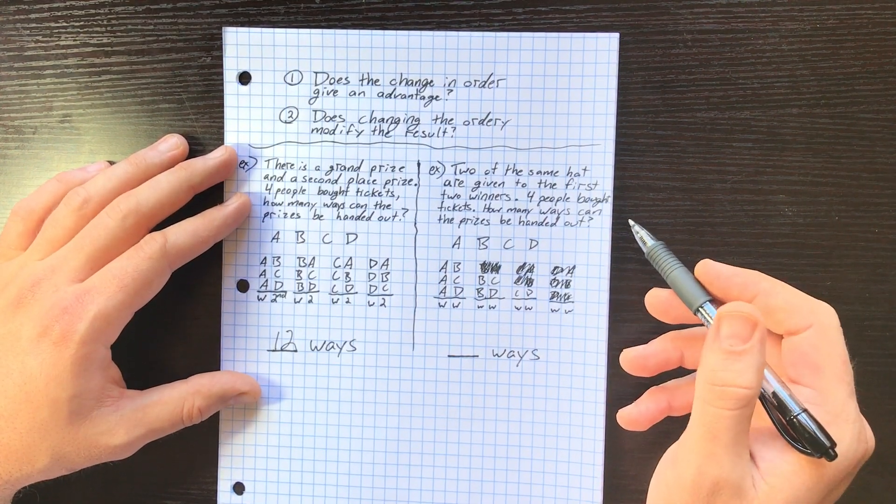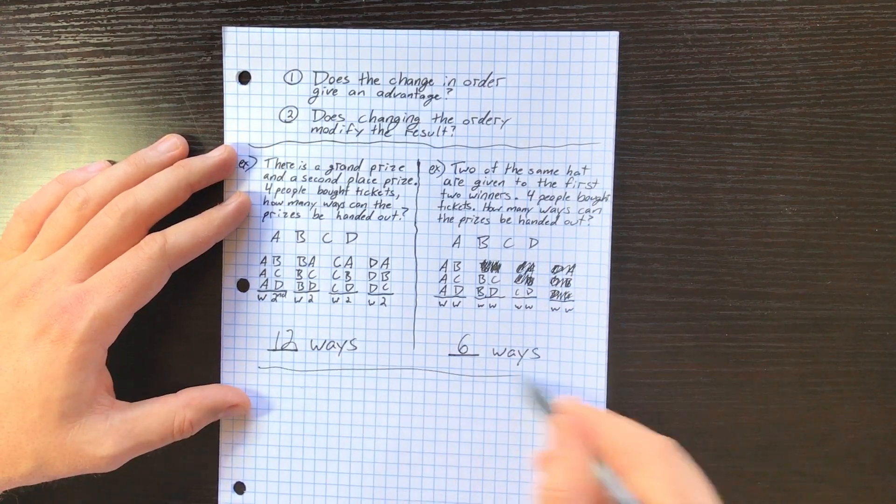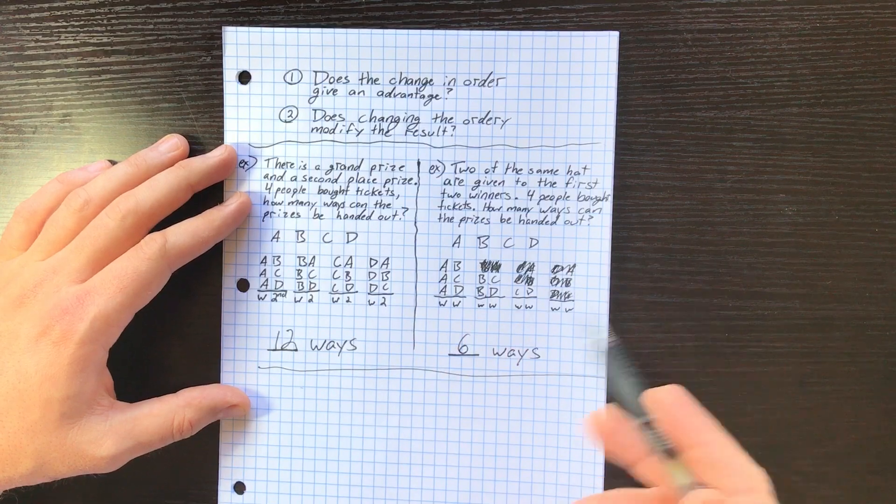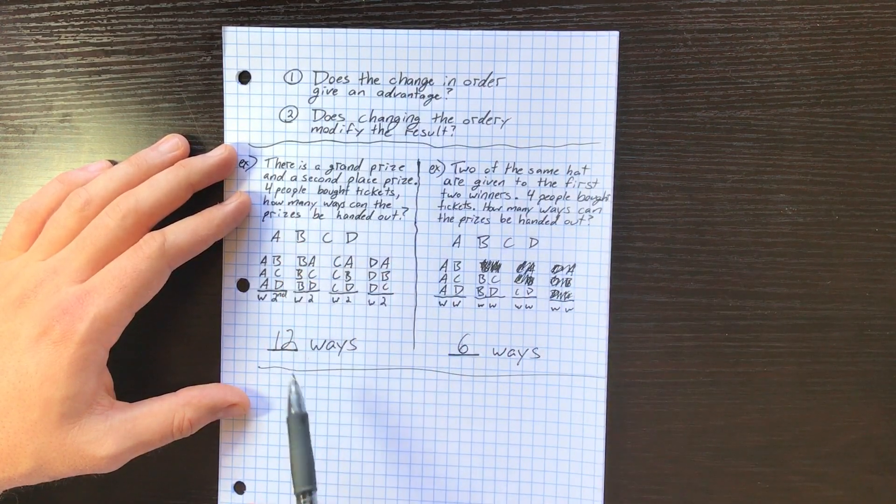So how many different ways could the prizes be handed out? 1, 2, 3, 4, 5, 6 ways. What if you don't want to list them like this? It does take a long time, which is why I prepped it. What if you don't want to list them and you just want a fast way to do it?